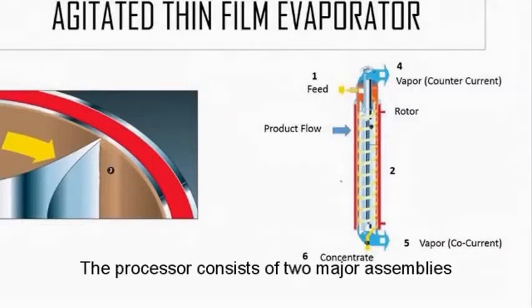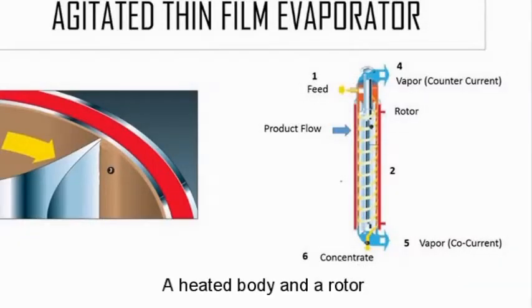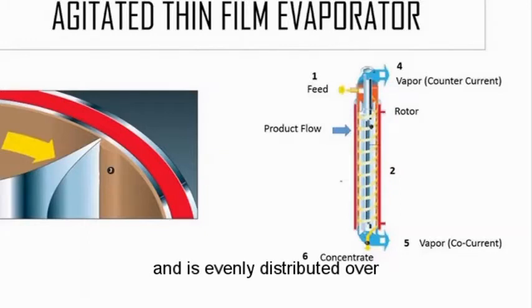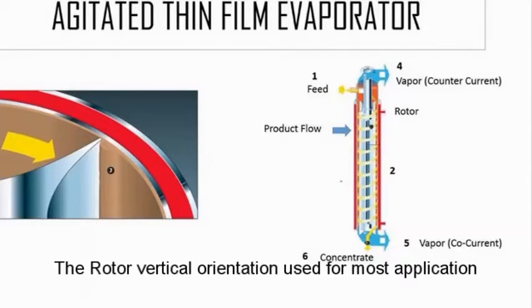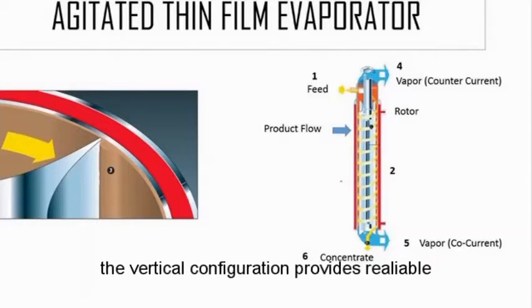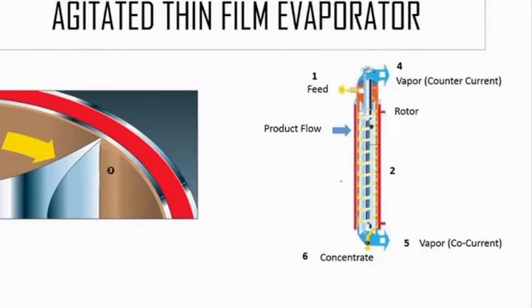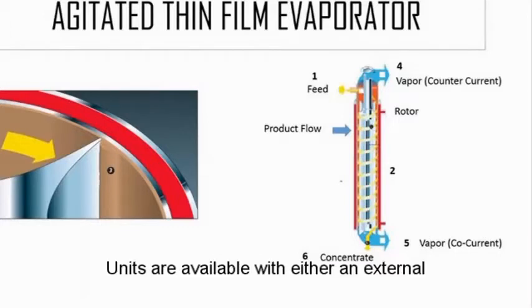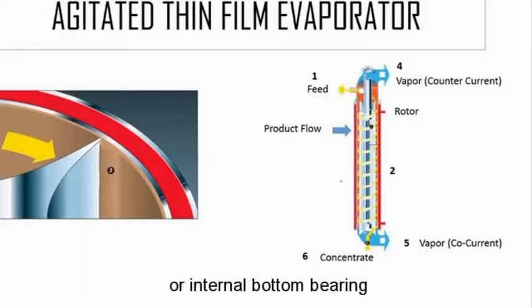The processor consists of two major assemblies: a heated body and a rotor. Product enters the feed above the heated surface and is evenly distributed over the unit's inner surface by the rotor. The rotor's vertical orientation is used for most applications. The vertical configuration provides reliable, efficient processing of viscous and fully fluid systems. Units are available with either an external or internal bottom bearing.